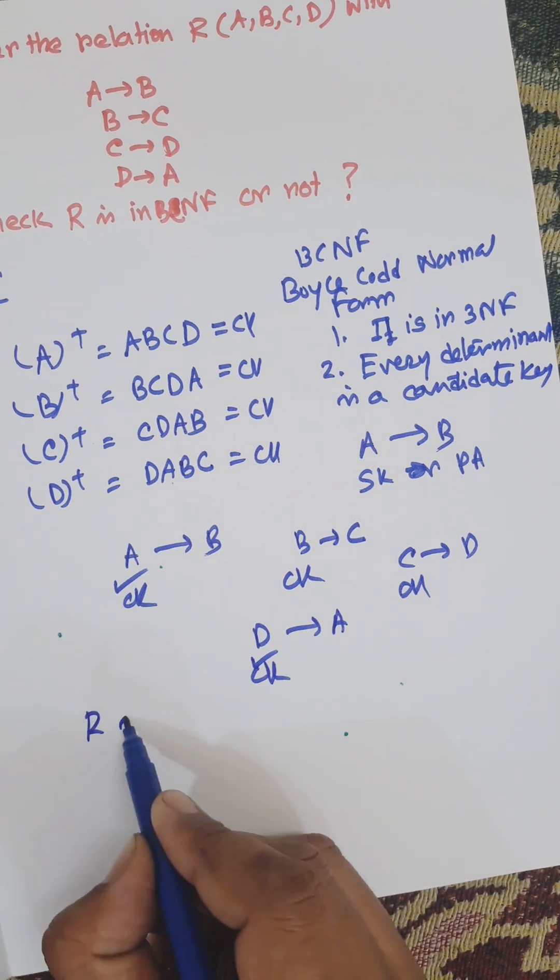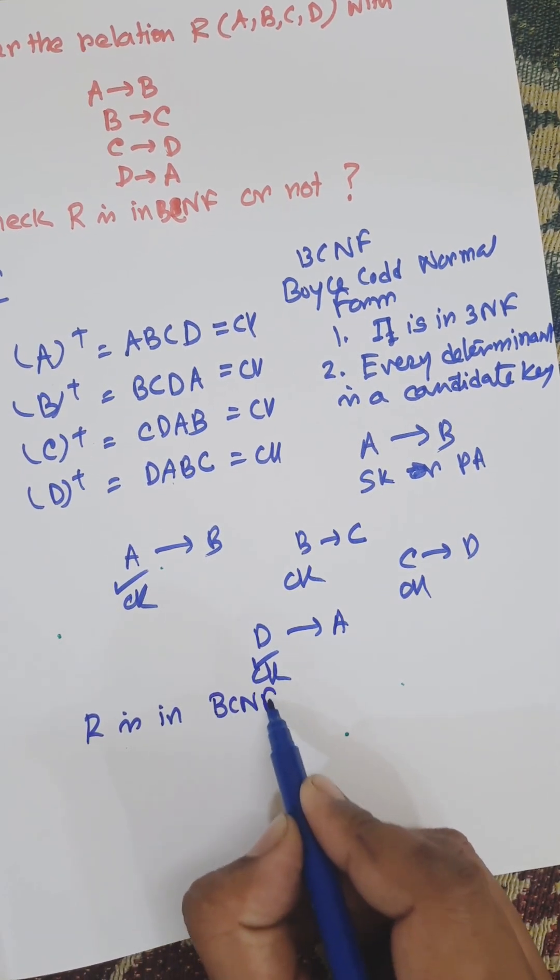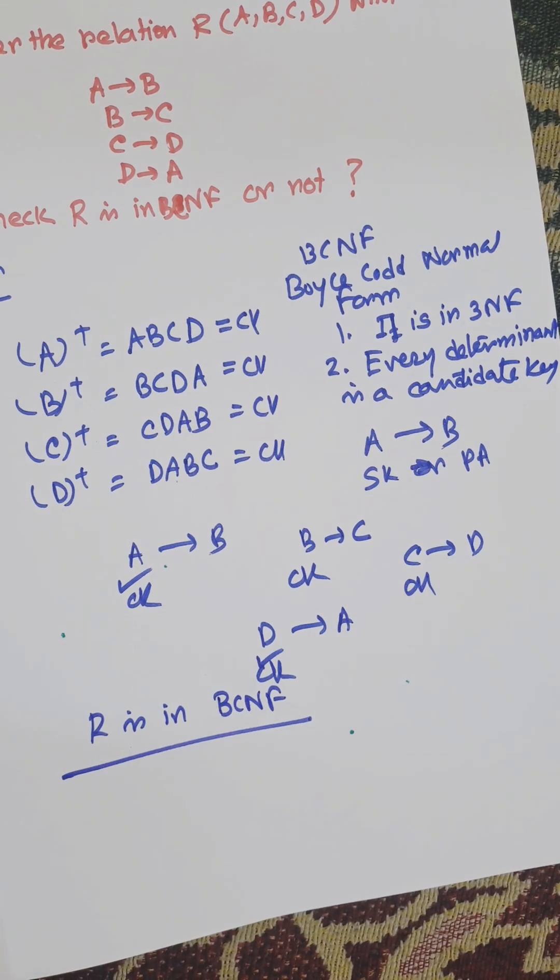We can say R is in BCNF. So it is stricter than third normal form.